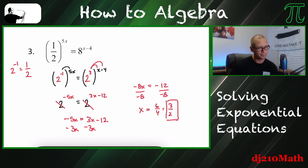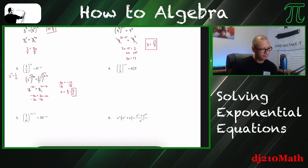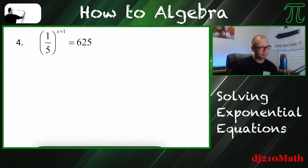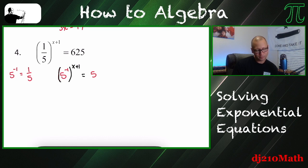Again, just like the last problem, the fact that it's a fraction, I can rewrite it as a whole number. The fact is that 5 to the negative 1 is really 1 fifth. So that means 5 to the negative 1 power, x plus 1 is the exponent. Okay, we have to write 5 to some power equals 625. So I believe it's 4. 5 times 5 is 25 times 5 is 125 times 5 is 625. So yes, 4th.